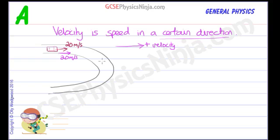Now what happens if the car goes around the corner? Because it's changing direction, its velocity will also be changing. But its speed, if it's going at a constant speed, its speed will be the same.